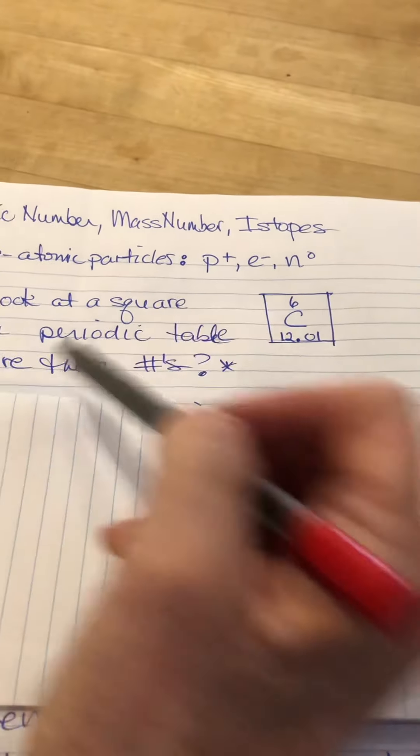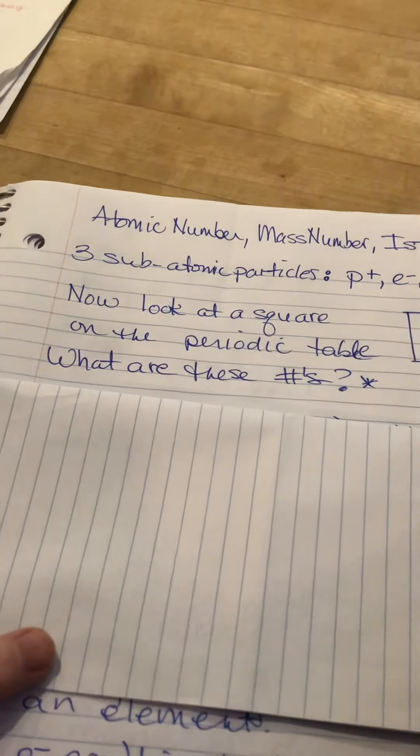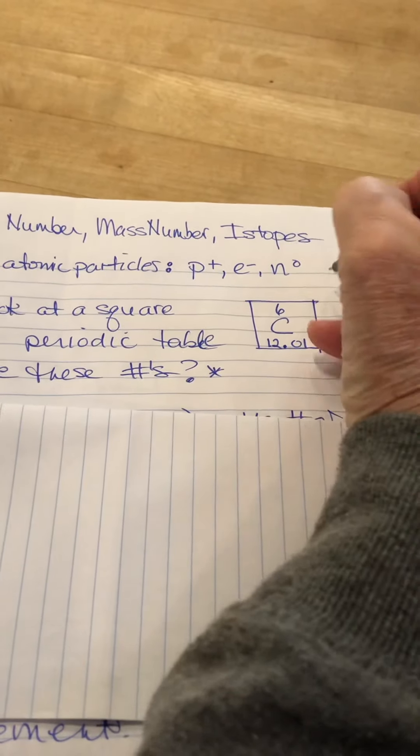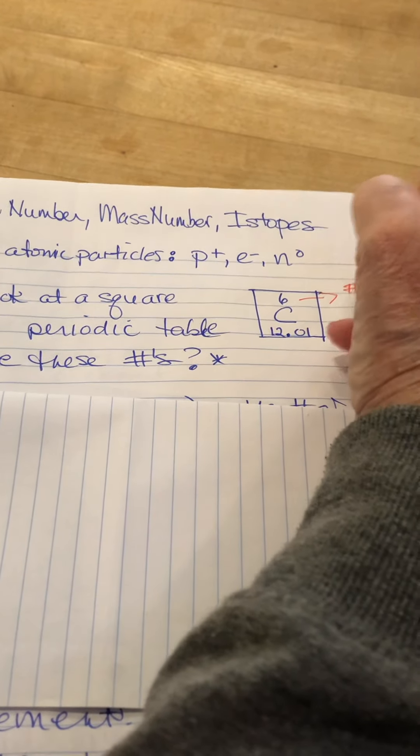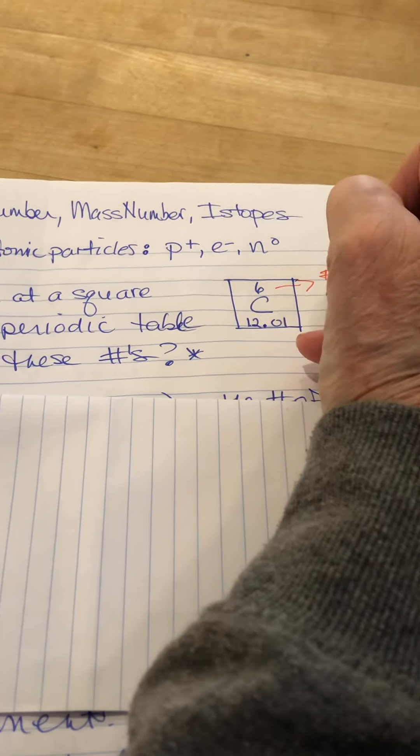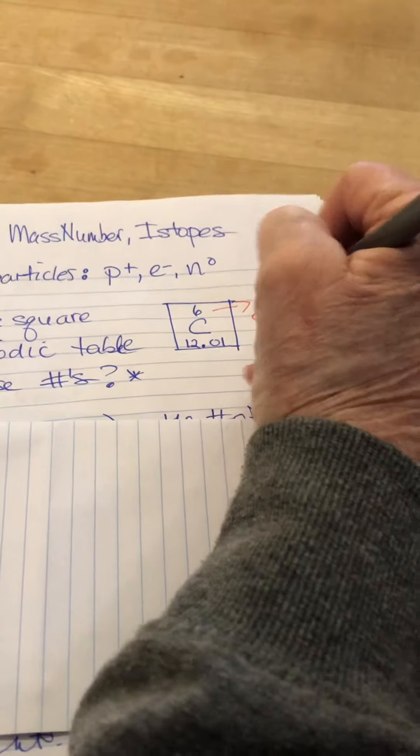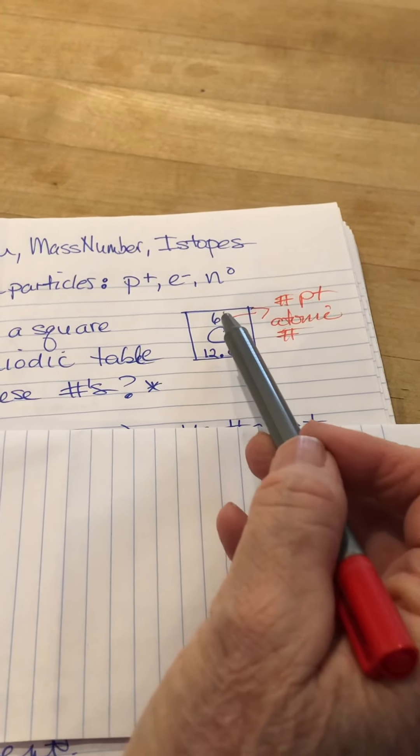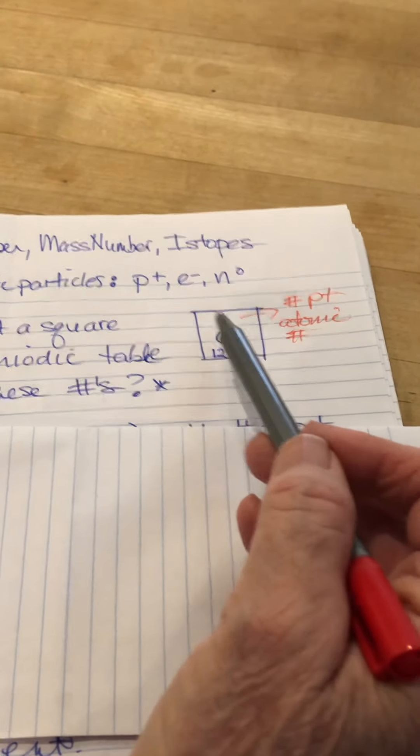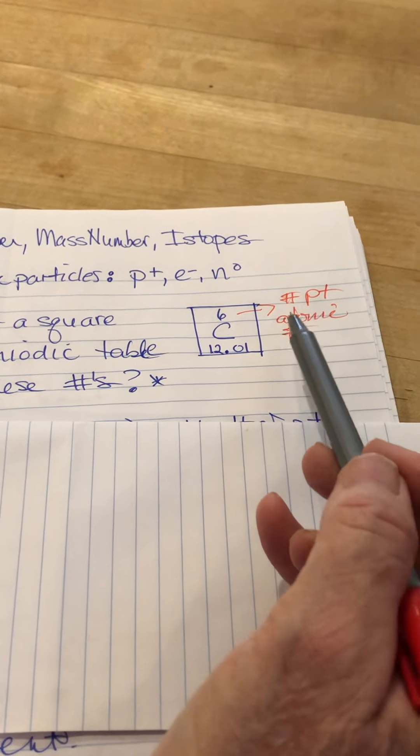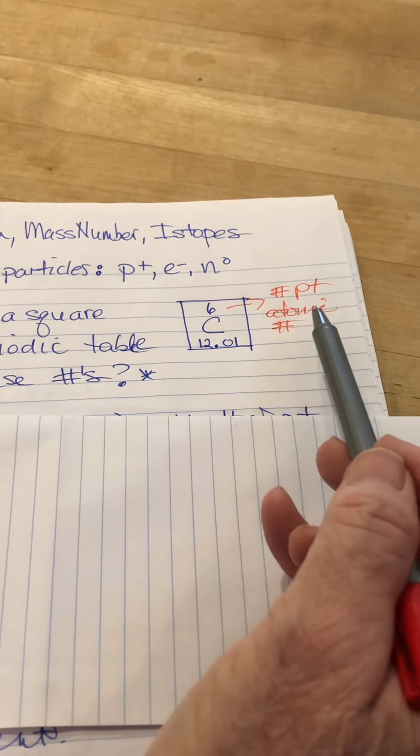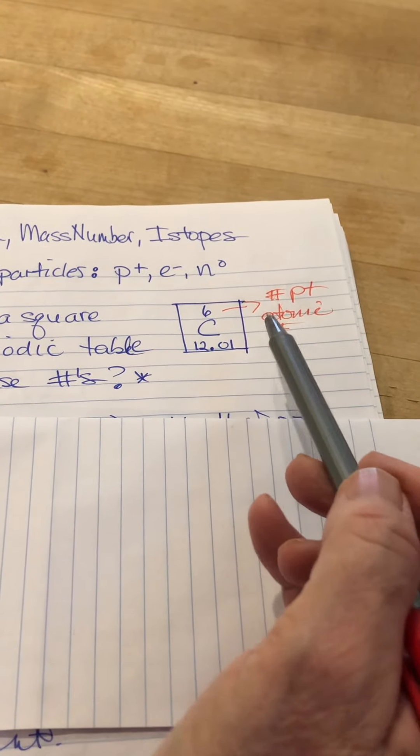So what are these numbers? This number here is the number of protons, or what is known as the atomic number. The integer value that you see in any element square is going to be the number of protons, otherwise known as the atomic number.